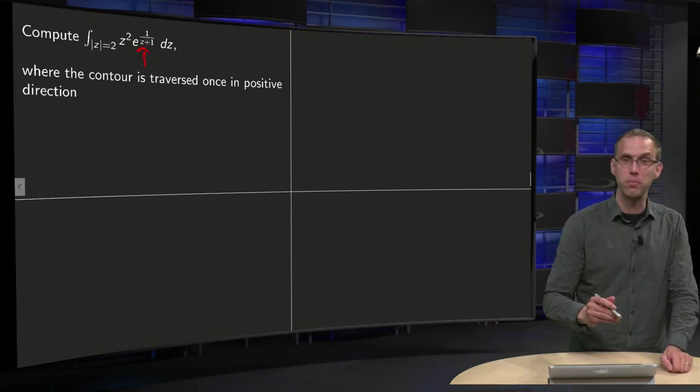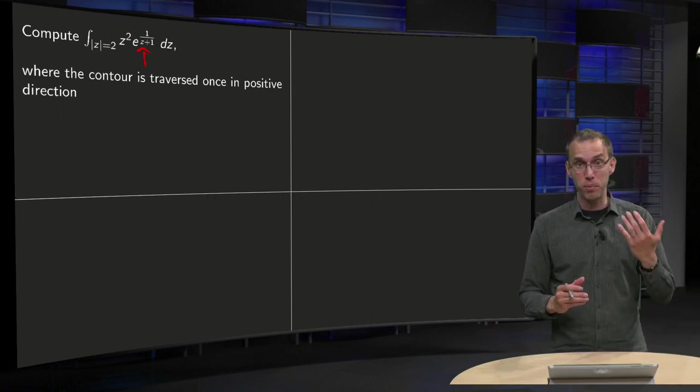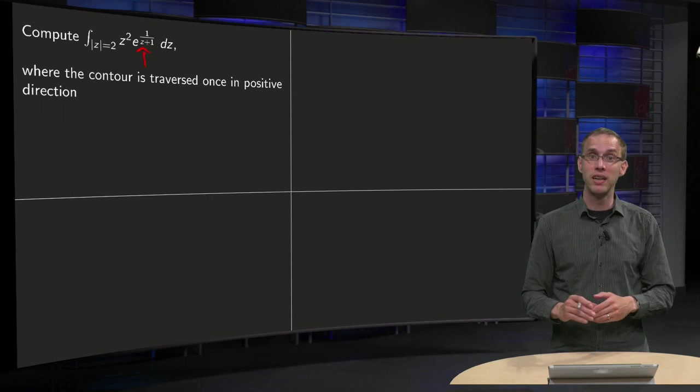We have a 1 over z plus 1 in the exponential. So there can be a problem with z equals minus 1, and in fact there is.